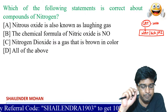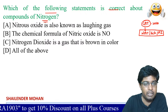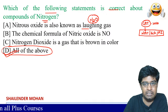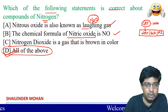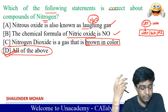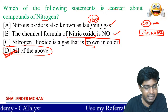Which of the following statements is correct about compounds of nitrogen? The answer is D — all of the above. Nitrous oxide is N2O, known as laughing gas. The chemical formula of nitric oxide is also correct. Nitrogen dioxide (NO2) is a brown-colored gas — in industrial areas, the brown cloud or fumes you see are due to high nitrogen dioxide concentration.